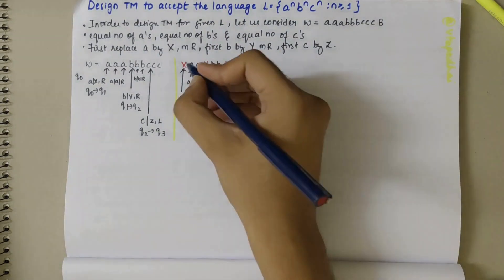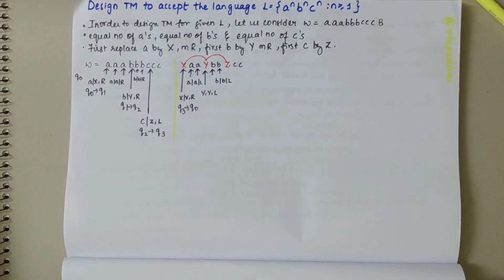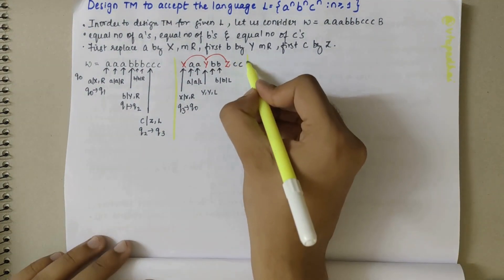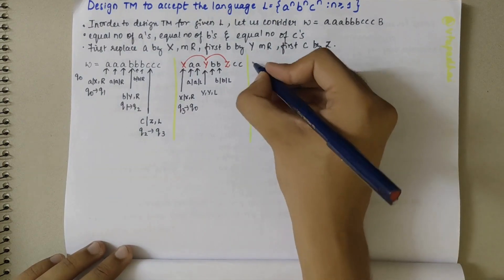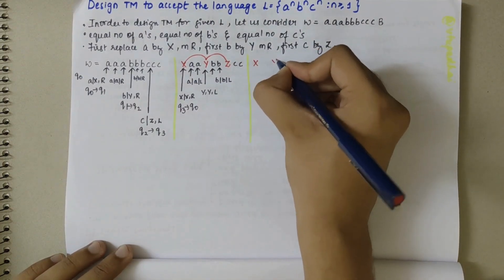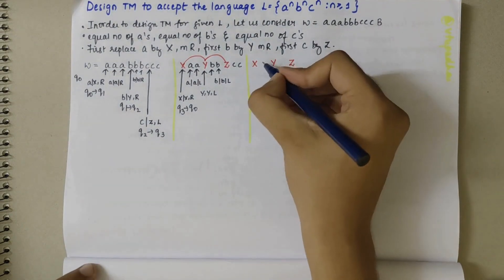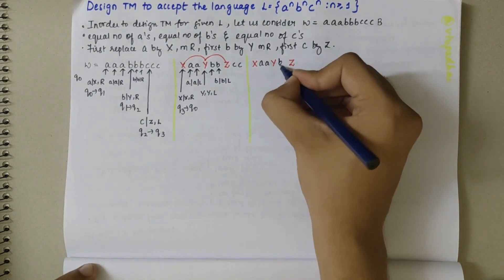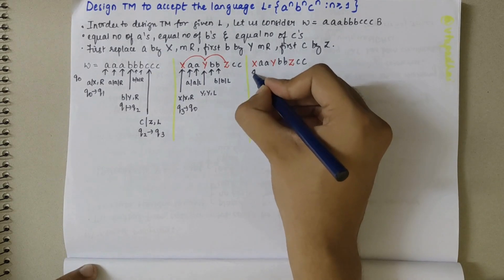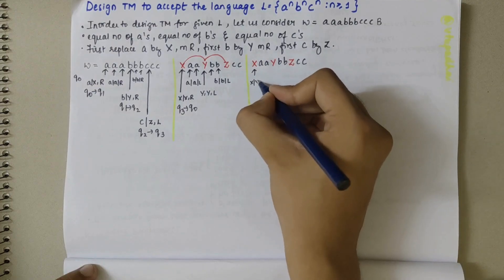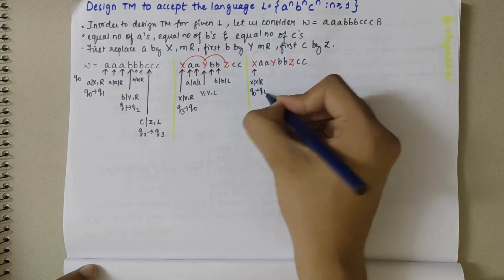We have now matched the first X, Y, and Z. Now we look for the second X, Y, and Z. The tape now has: XX, YY, ZZ with remaining A, B, C. Starting from the second X — replace X by X and move right in Q0. When we encounter the second A, replace A by X and move right, transitioning from Q0 to Q1.